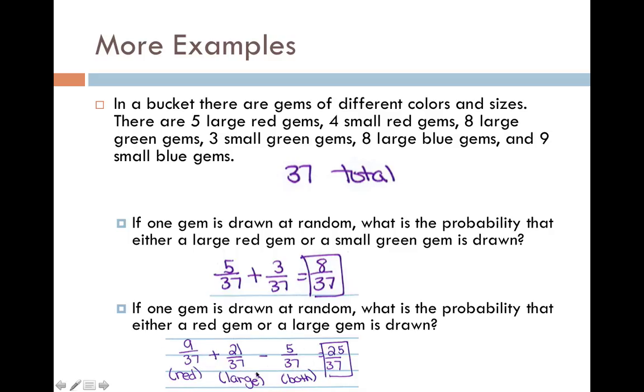The probability of red plus the probability of large minus the probability of red and large. And that's going to give me 25 over 37.